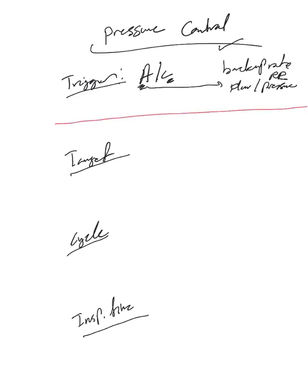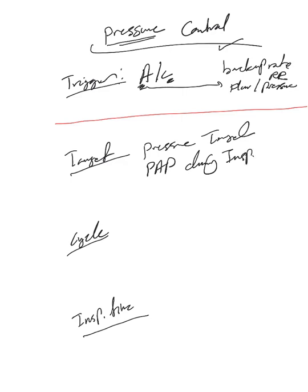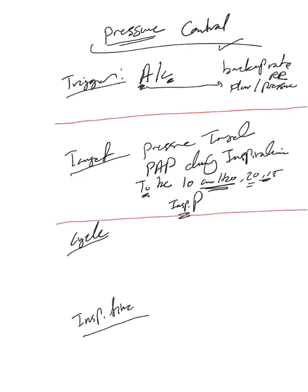Pressure control takes its name from its target — the target is pressure. You have to provide the ventilator or respiratory therapist with your pressure target, which means your desired proximal airway pressure during inspiration. Do you want it to be 10 cmH2O, 20, or 15 — whatever you want it to be. It's measured in centimeters of H2O, and this number is called inspiratory pressure.